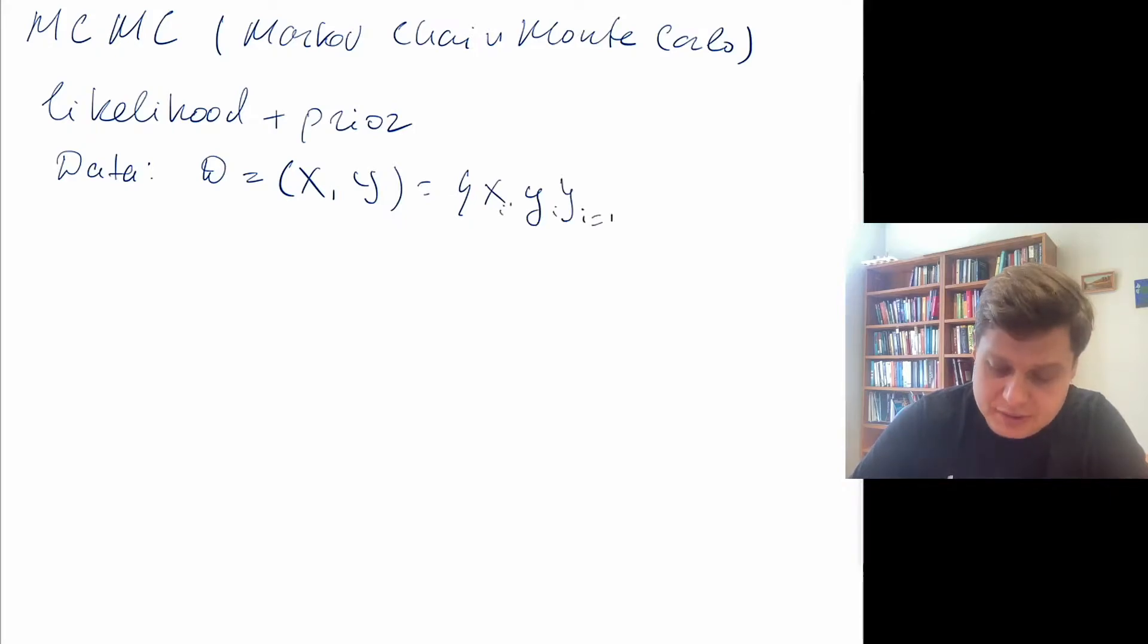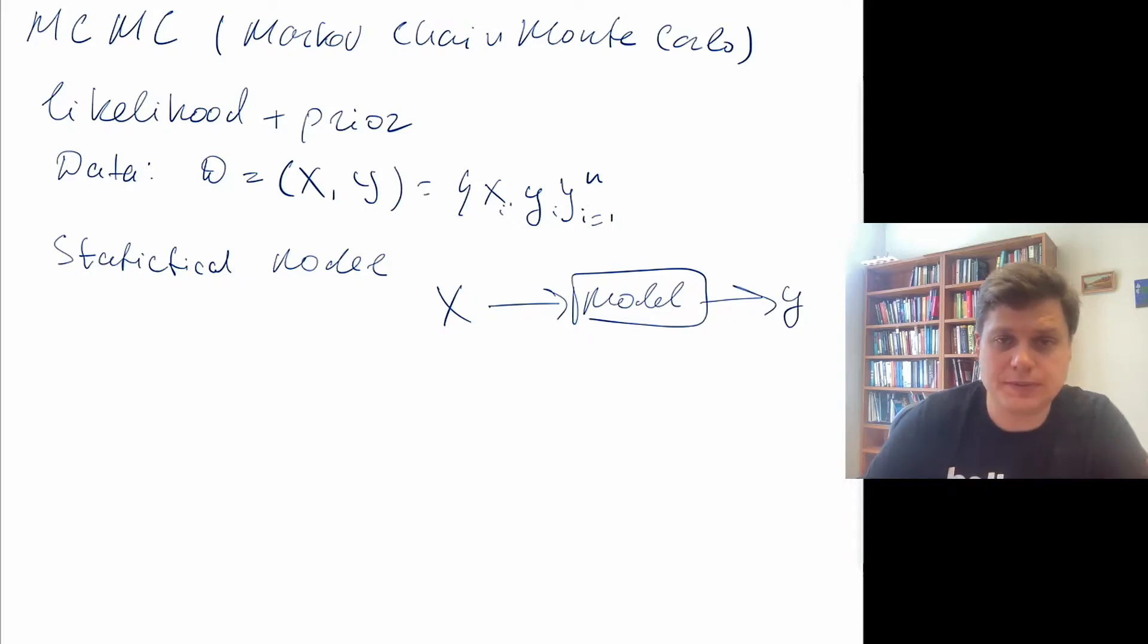And we have small n observations, and then we have some statistical model that relates X to Y. So it takes X as an input and generates Y as the output, and this model is parameterized by parameters theta.